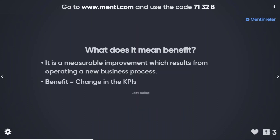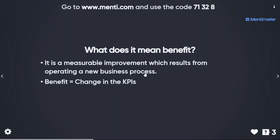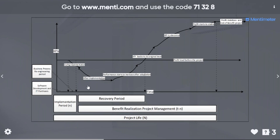What does it mean for benefits? A benefit is a measurable improvement which results from operating a new business process. For example, the inventory level now is 60 units per month — this is my KPI. I develop and implement a new system; the new KPI is 40. I moved from 60 to 40, so the benefit is 20 units saved in inventory. A benefit is a change in the KPIs — we need to know the current KPIs and the targeted KPIs in the future.